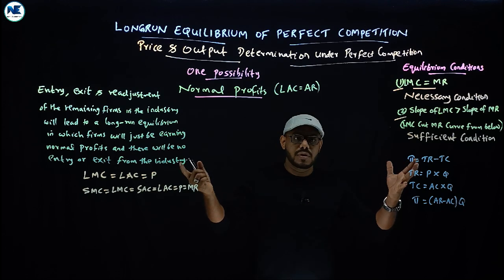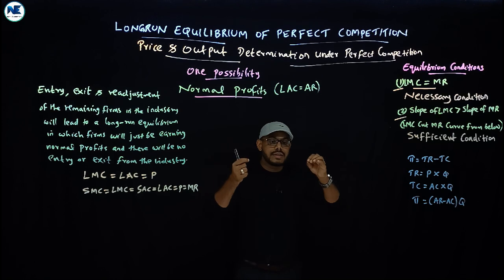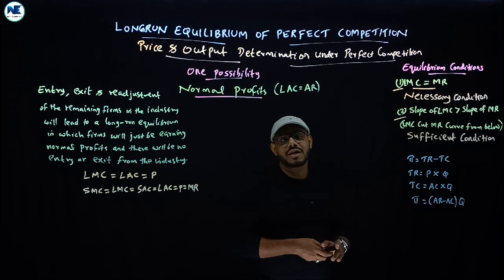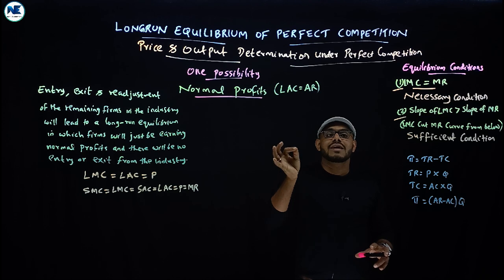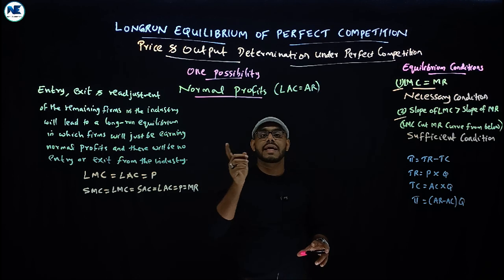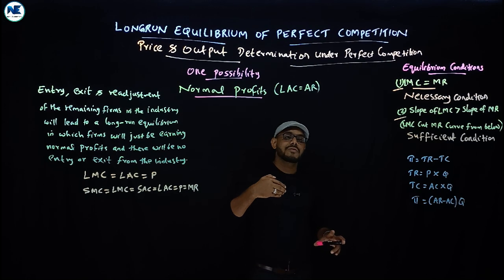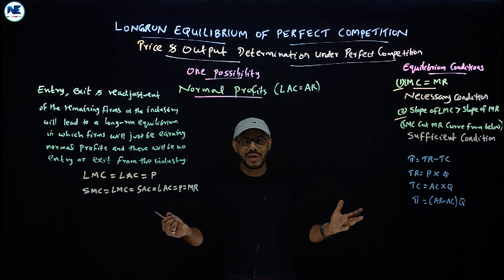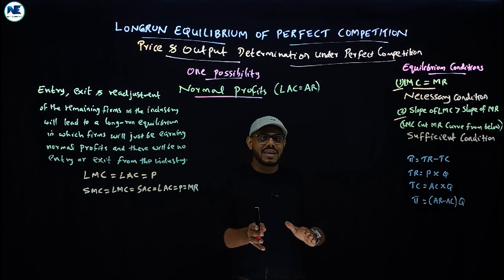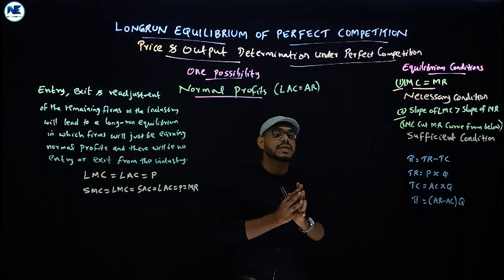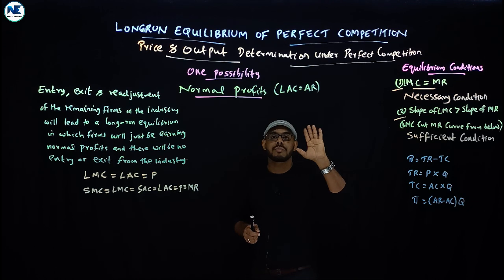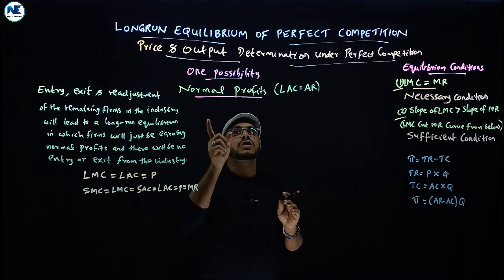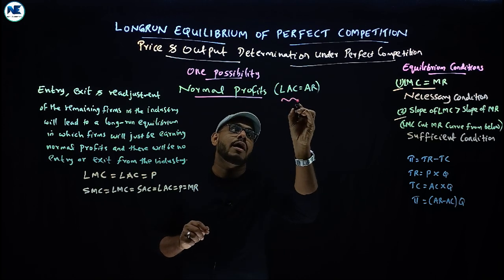Under perfect competition, a large number of firms are producing homogeneous products. Each individual firm faces a horizontal demand curve — that is, a perfectly elastic demand curve. More importantly, there is absolute freedom of entry and exit. These are the key features of perfect competition, and because of them, in the long run, firms in the industry end up earning only normal profit.